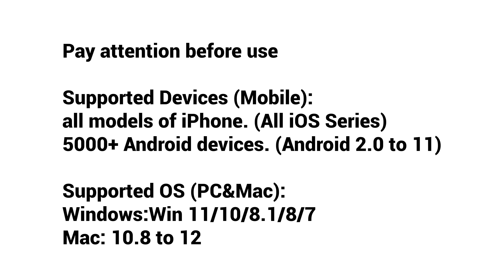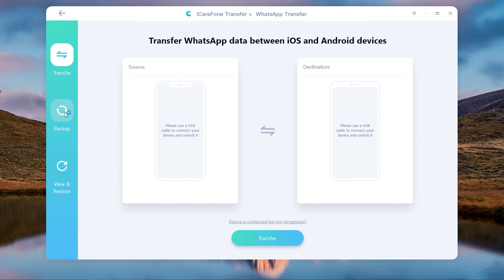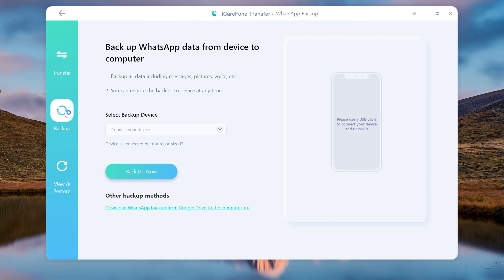Before start, please pay attention on the notes. Then choose WhatsApp, click backup, and connect your Android device with USB cable.